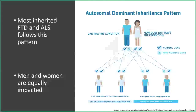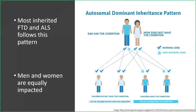If ALS or FTD is familial, it's usually inherited in what we call a dominant pattern. For example, if dad has FTD, there's a 50% chance he can pass on the normal copy of the gene, and a 50% chance he can pass on the copy that causes FTD. So each child has a 50% chance of inheriting the gene that can cause FTD if it's inherited in this dominant pattern and one parent is affected.